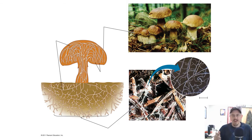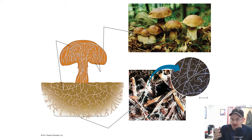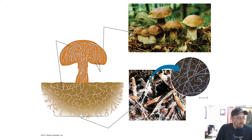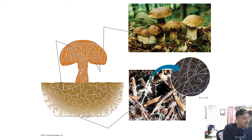So remember, fungi, like you and I, are heterotrophs. They don't photosynthesize. They don't move around. So they used to be studied along with plants by botanists, but we discovered recently they're more closely related to animals than they are to plants, but they don't run around. The body plan is made up of these chains of cells that we see all throughout, called hyphae.